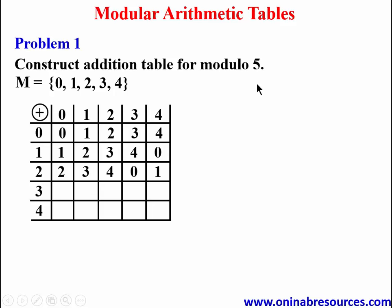We subtract 5 because we are working with modulo 5. If it is modulo 6 we subtract 6, if it is modulo 7 we subtract 7, or their multiples. Moving to the row of 3: 3 plus 0 gives 3, 3 plus 1 gives 4, 3 plus 2 gives 5 — 5 minus 5 gives 0 — 3 plus 3 gives 6 and 6 minus 5 gives 1, 3 plus 4 gives 7 and 7 minus 5 gives 2.